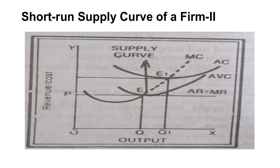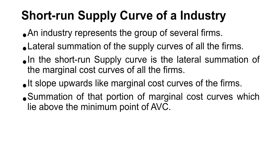Now we will discuss the short-run supply curve of industry. Previously we discussed the short-run supply curve of a firm. An industry represents a group of several firms which produce homogeneous products. The supply curve of the industry is the lateral summation of the supply curves of all the firms. In the short run, it is the lateral summation of the marginal cost curves of all firms.